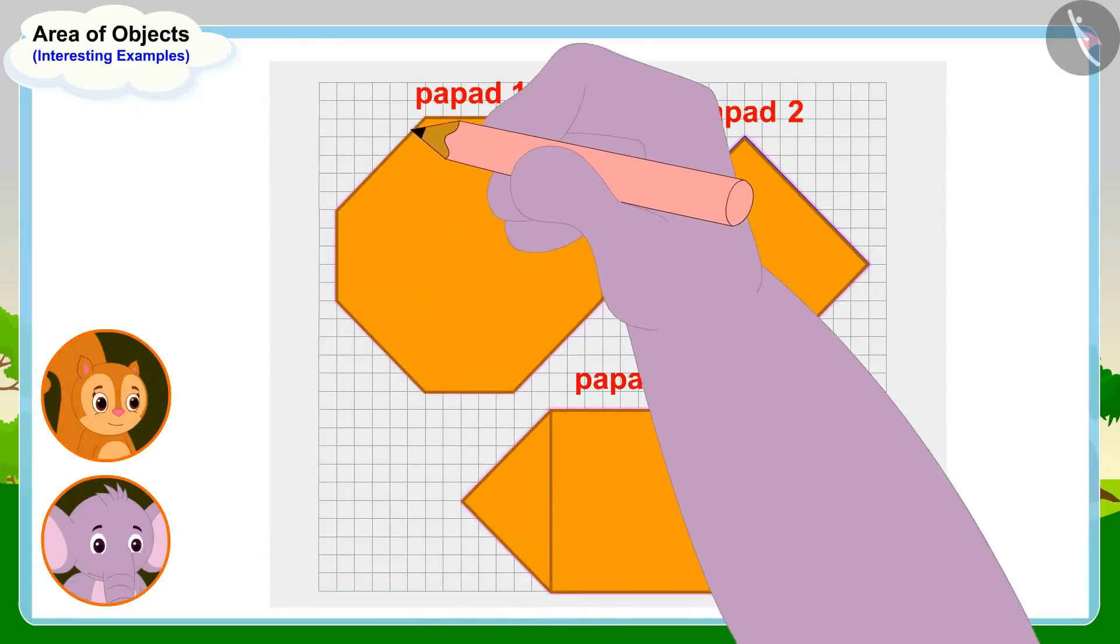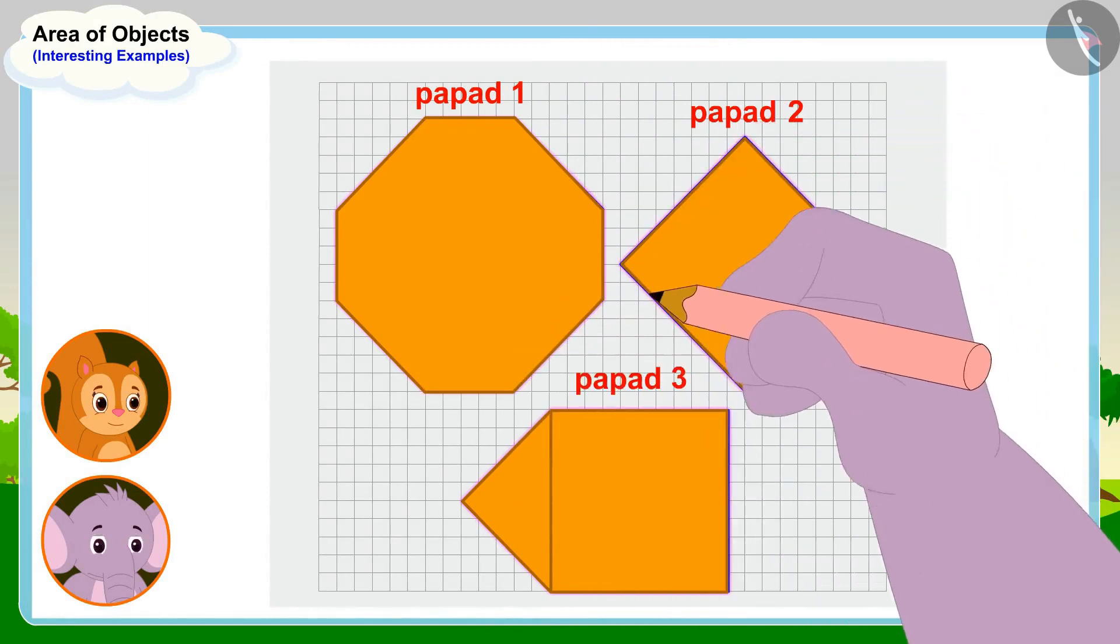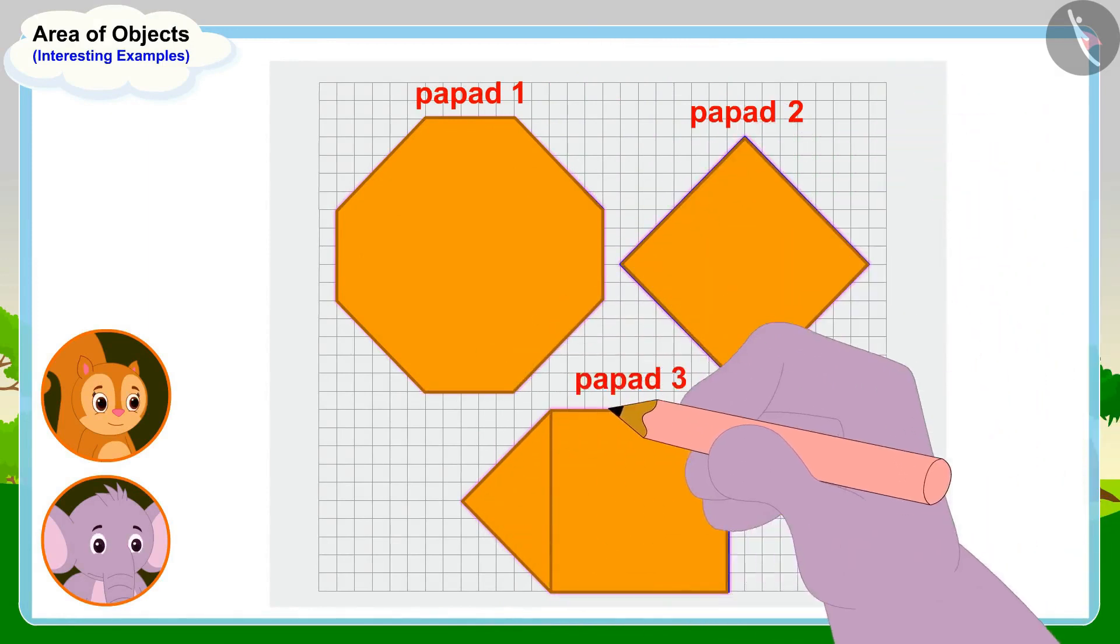Appu then made outlines of poppers of all three shapes on the paper with the help of a pencil.